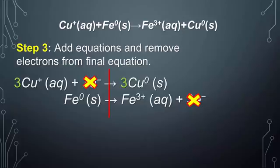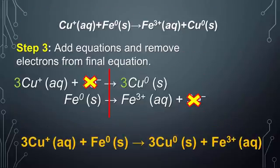Finally, rewrite your equation. You should notice you should have three moles of copper ions and one mole of iron, and they will yield three moles of copper, which is neutral, and one mole of iron ions.